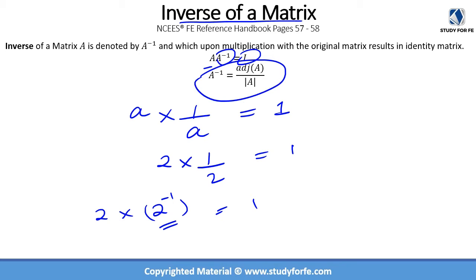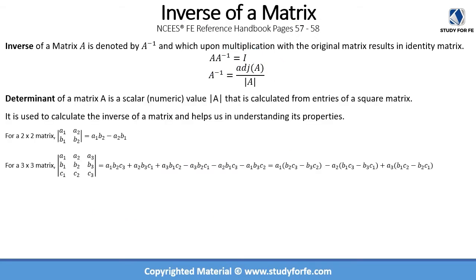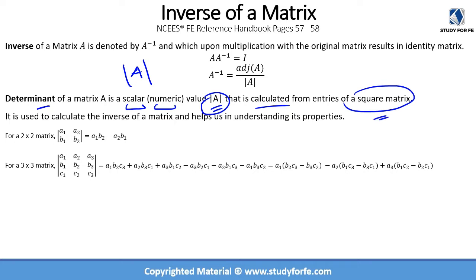More formally, in order to calculate the inverse of a matrix, we need to calculate two additional details: the first being the adjoint of the matrix, and the second being the determinant of the matrix. The determinant of a matrix is a scalar — a numeric value — indicated with two sidebars, and it is calculated from the entries of a square matrix. We have to have a square matrix in order to calculate the determinant, and it is used to calculate the inverse of a matrix.